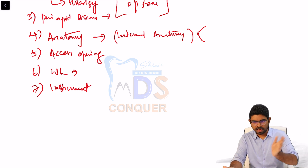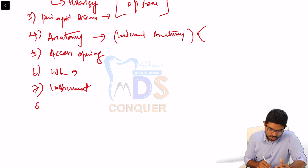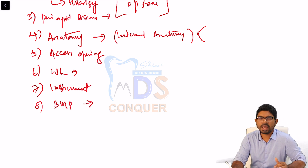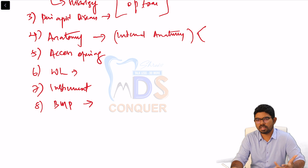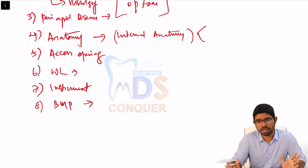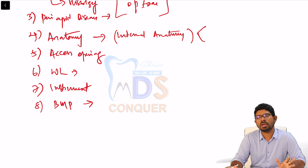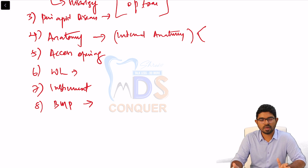Once done with instrumentation — both traditional and advanced — the next topic is biomechanical preparation. Learn the different types: step-back and others, moving from apex to coronal or coronal to apex. They can ask advantages and disadvantages, and which technique to use for a particular canal. Understand master cone, initial apical file, master apical file, and how many times to increase.